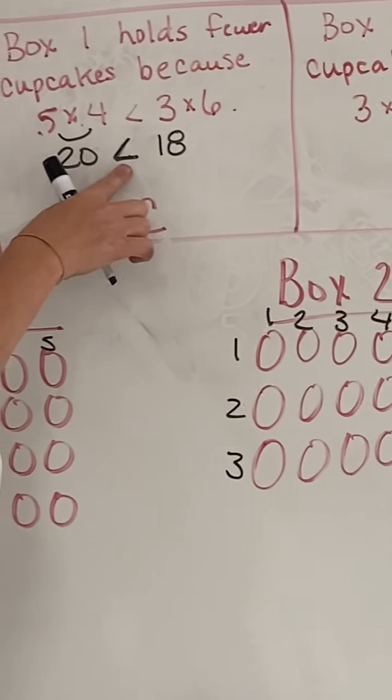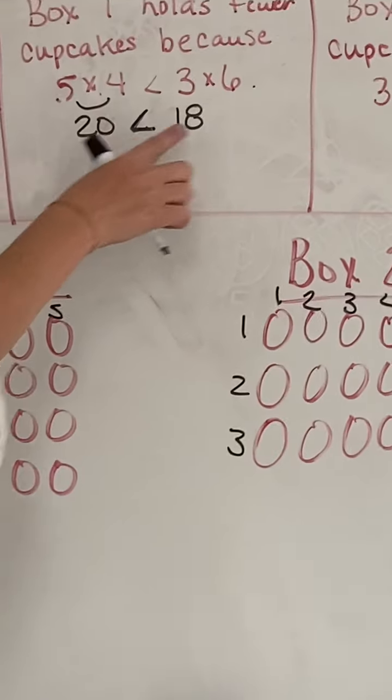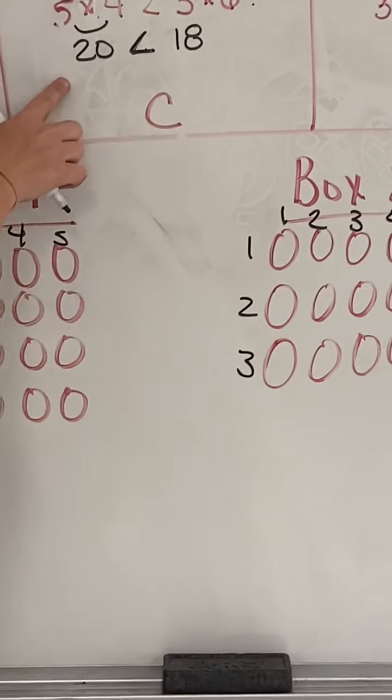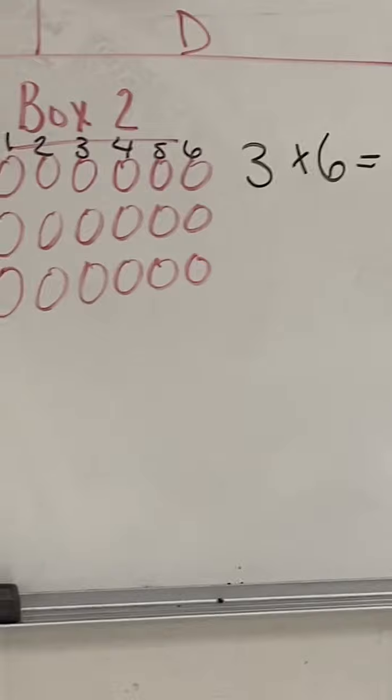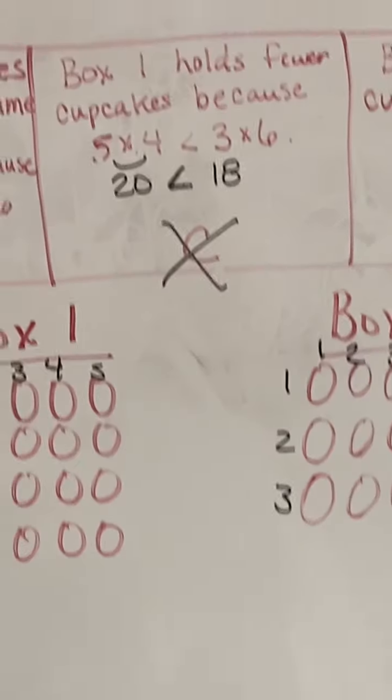So look at this one. Is the alligator biting the bigger number? Nope. He's biting the smaller number. So this one's not true because it was saying box one holds fewer cupcakes. So we know that one's not correct.